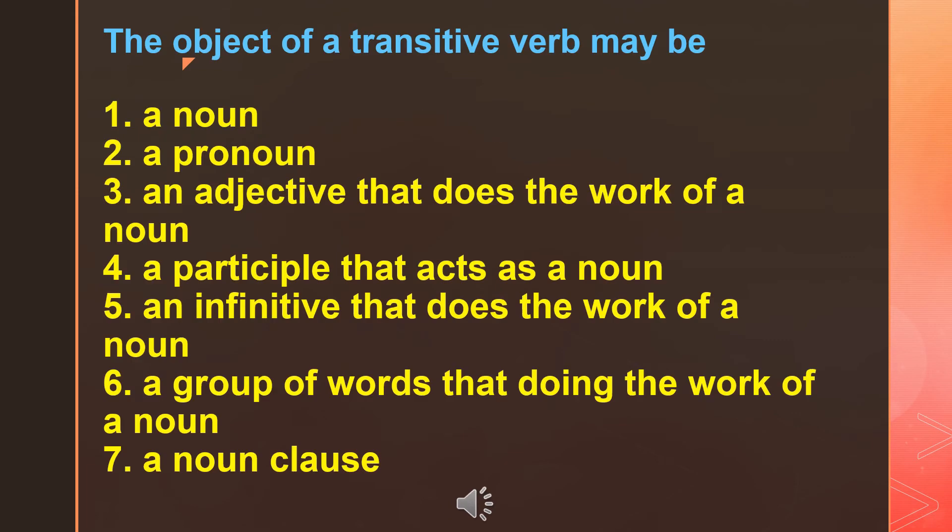The object of a transitive verb may be a noun, a pronoun, an adjective that does the work of a noun, a participle that acts as a noun, an infinitive that does the work of a noun, a group of words doing the work of a noun, or a noun clause.